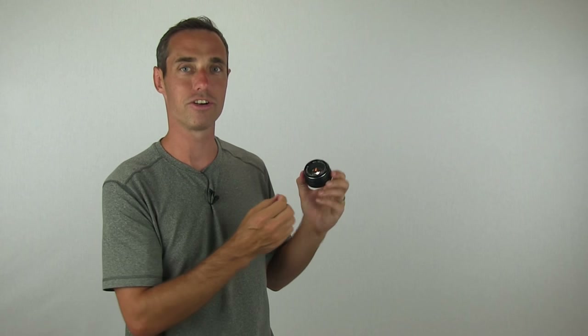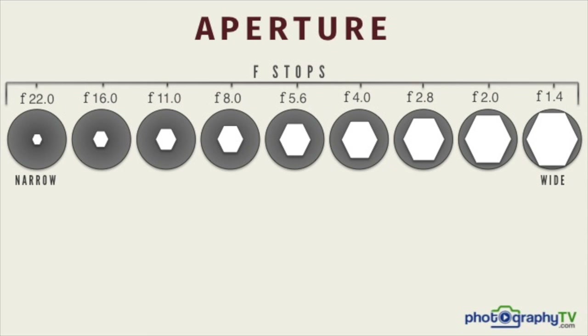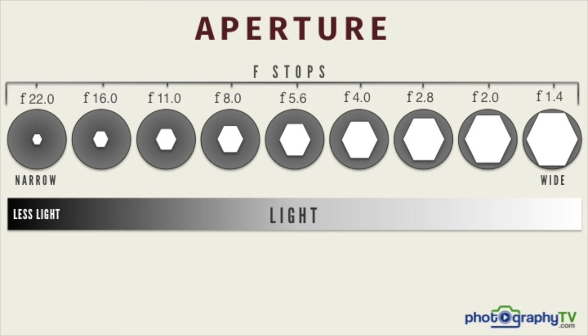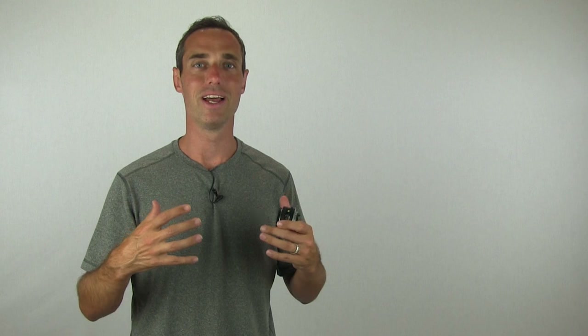The first thing to understand about aperture, looking back at this diagram, is that depending on what f-stop you're at, f22 — a very narrow aperture — lets in a very low amount of light. f1.4, which is considered a very wide aperture, lets in a lot of light. These f-stop numbers can be somewhat technical, probably one of the most technical things you'll learn in photography, but once you understand aperture it really does open up so much creativity and control for your photographs.